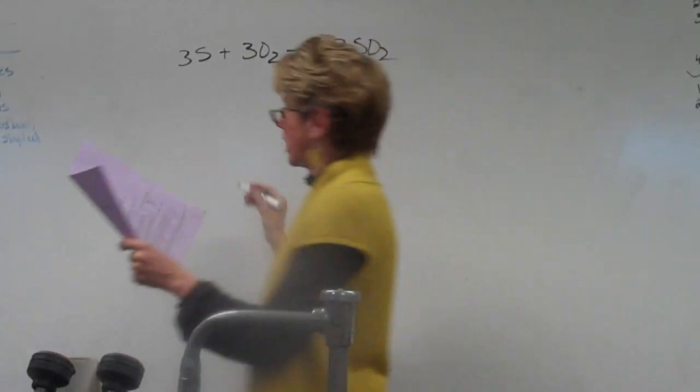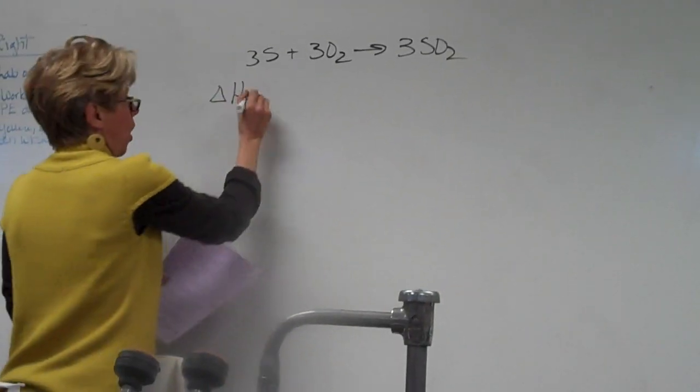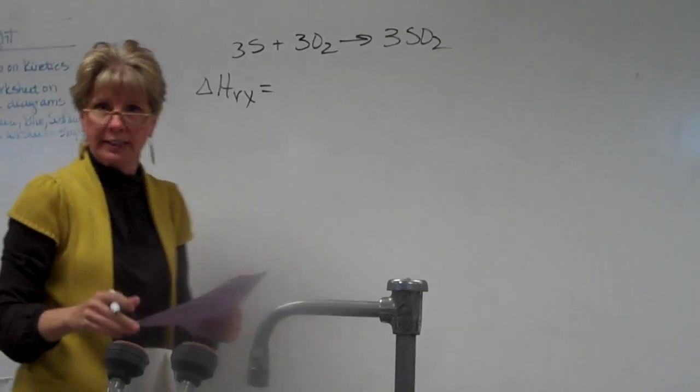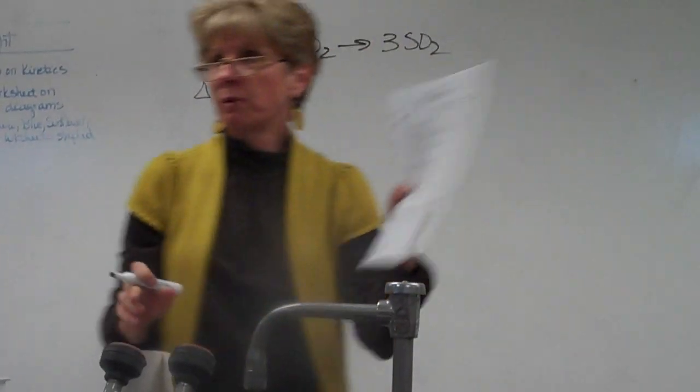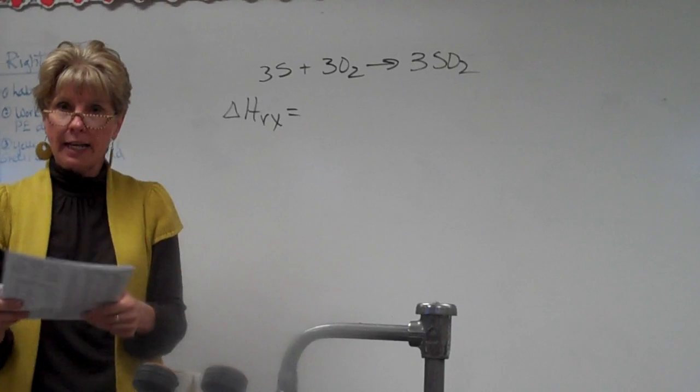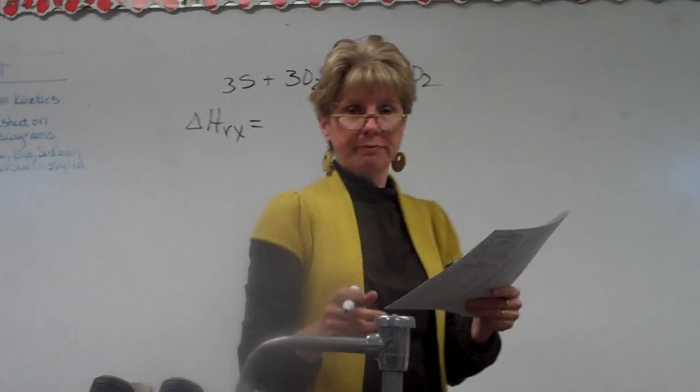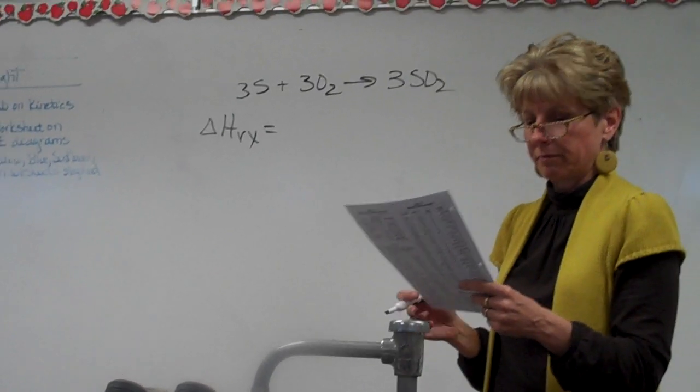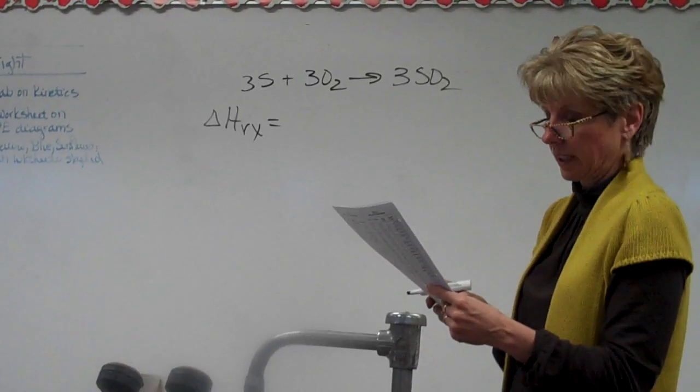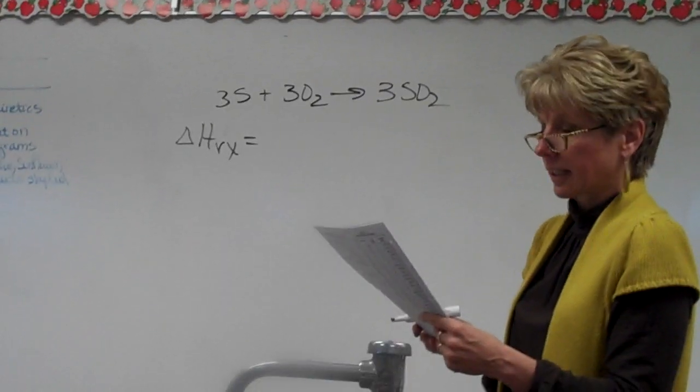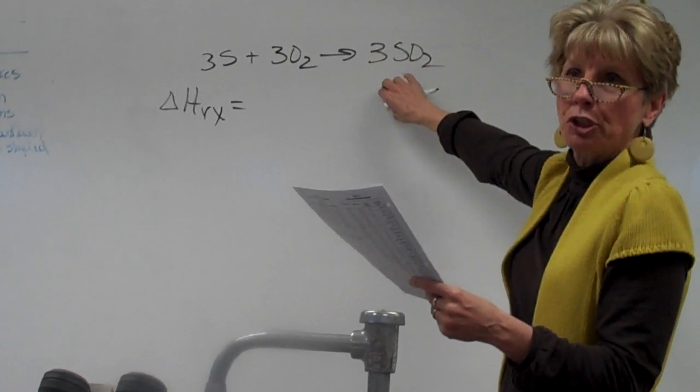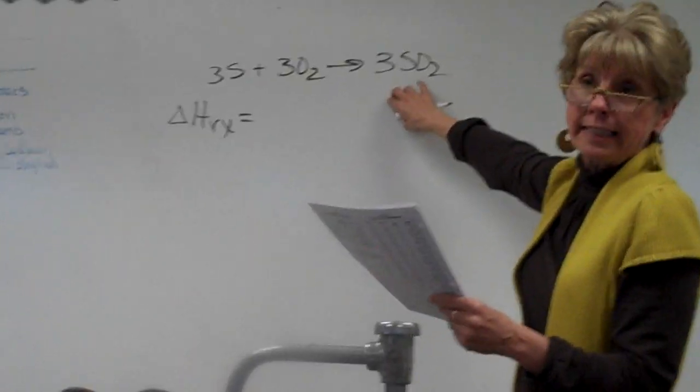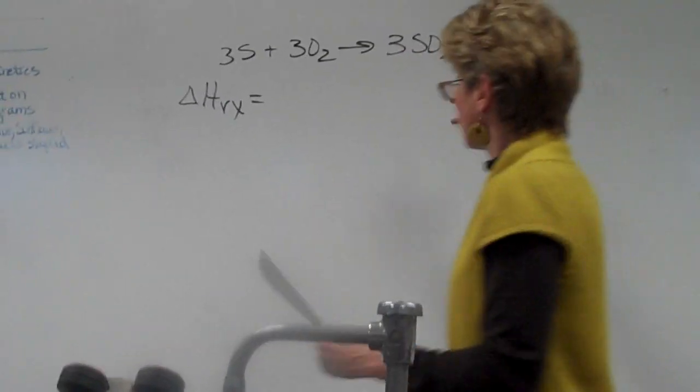So to solve for delta H, all we want to find is what is the heat of reaction for this thing. So everyone go to table P. Table P. Look up SO2 for me. Do you see that it's negative 296?